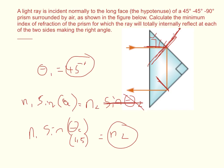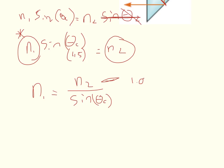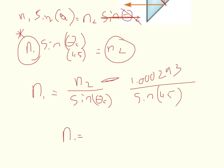N2 is the index of refraction for air, and we need to isolate N1, so we divide by the sine of the critical angle: N1 equals N2 divided by sine of the critical angle. Plugging in numbers — air is 1.000293 — divided by the sine of 45 degrees, gives N1 must equal 1.414628.